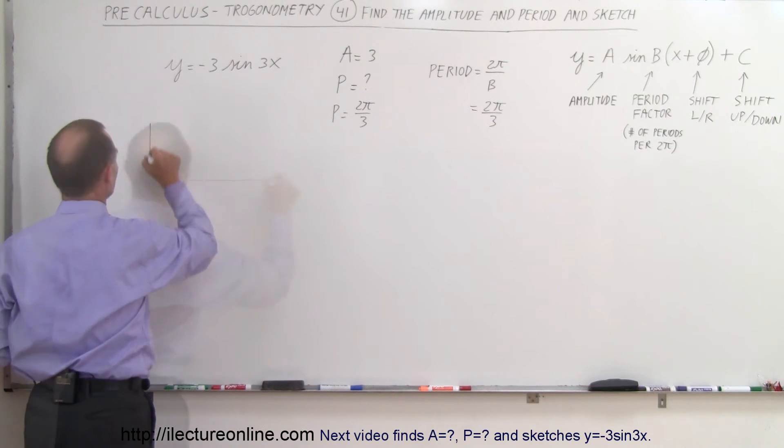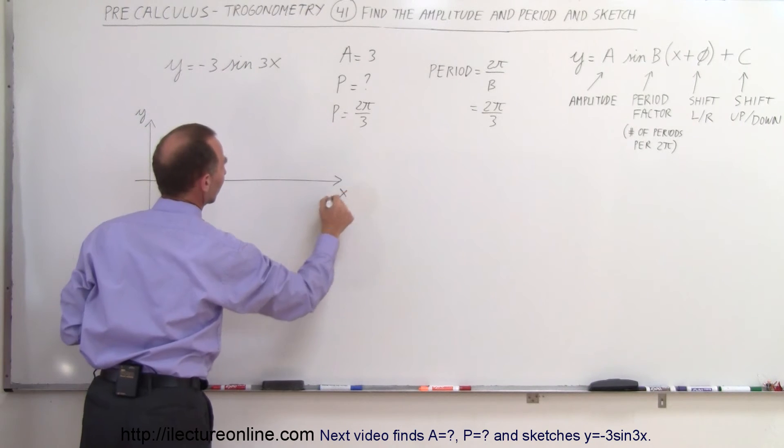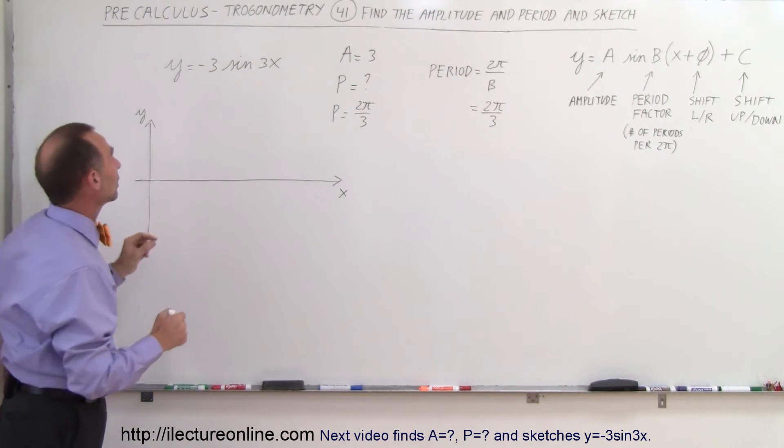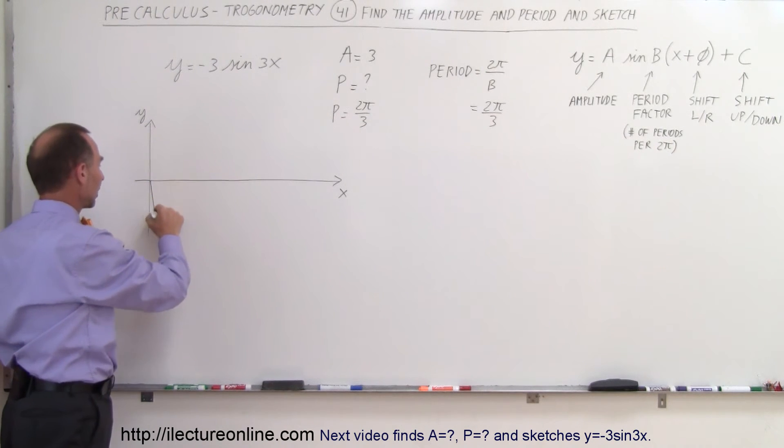So now we're ready to sketch it. So here we have the y-axis, we have the x-axis. Notice we're trying to draw the sine with the negative sign and the amplitude is 3 so negative means instead of starting upward we start downward so it's going to look like this.